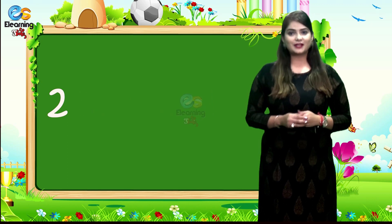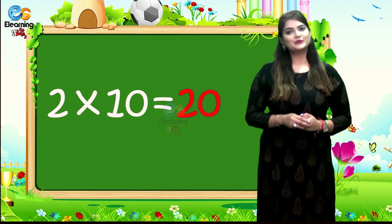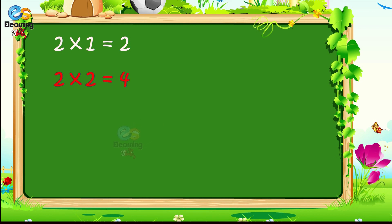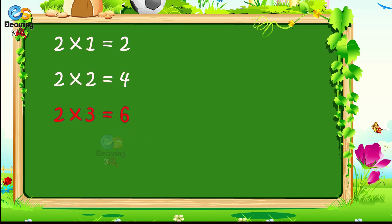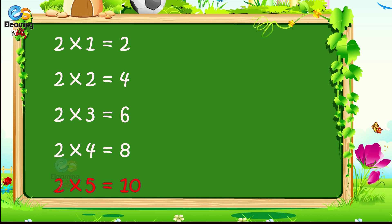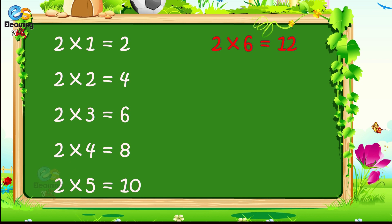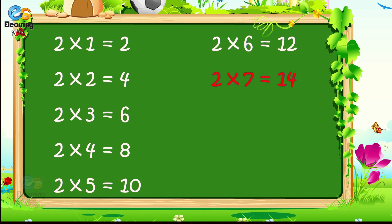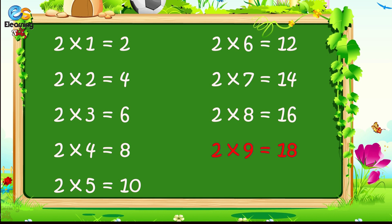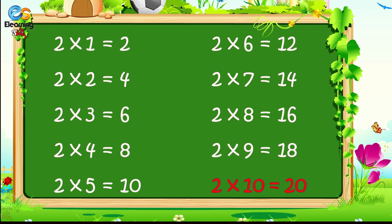2 9s are 18, 2 10s are 20. 2 1s are 2, 2 2s are 4, 2 3s are 6, 2 4s are 8, 2 5s are 10, 2 6s are 12, 2 7s are 14, 2 8s are 16, 2 9s are 18, 2 10s are 20.